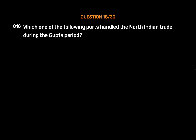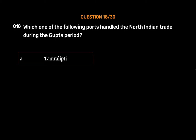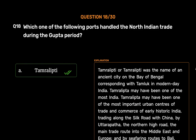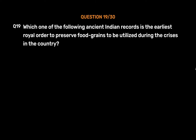Question number eighteen: Which one of the following ports handled the north Indian trade during the Gupta period? Option A: Tamralipti, Option B: Broach, Option C: Kalyan, Option D: Cambay. The correct answer is Option A, Tamralipti. Tamralipti was an ancient city on the Bay of Bengal corresponding to modern Tamluk in India. It was one of the most important urban centers of trade and commerce in early historic India, trading along the Silk Road with China via the northern highway, and by seafaring routes to Bali, Java, and the Far East.